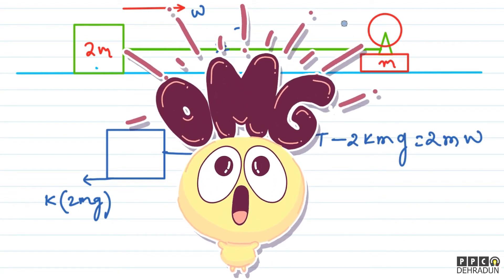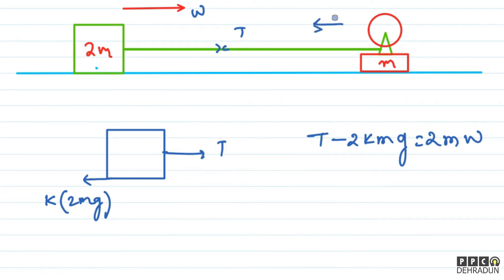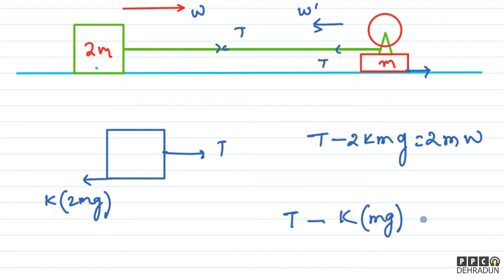Now we don't know what the acceleration of the small mass m block — the motor block — is. So let's say its acceleration towards the left is W'. For this block, the equation will be: Tension minus friction kMg equals M times W'. So friction acting on it is k times Mg, and this equals M into W'.